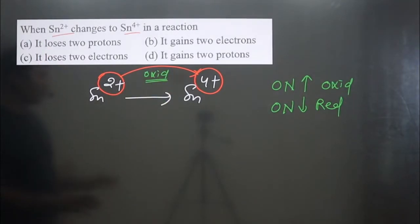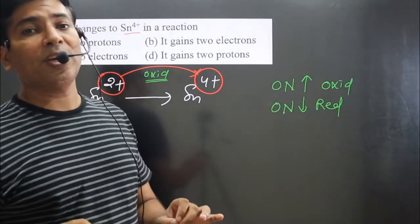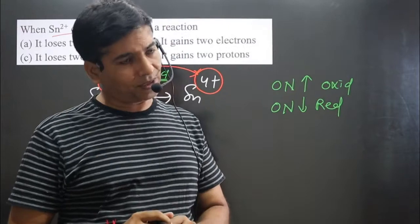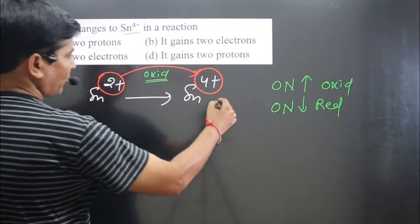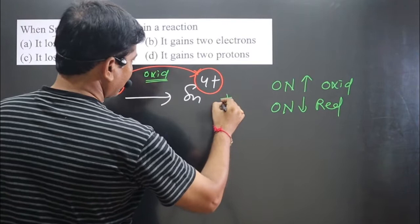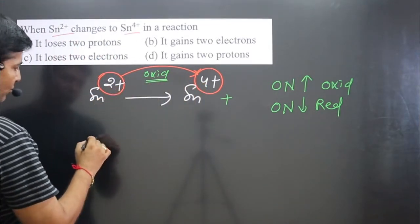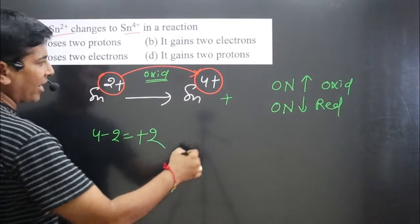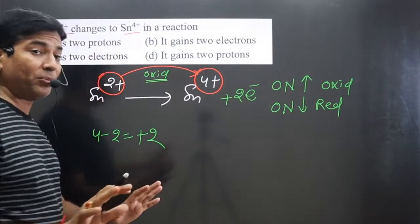We have also learned that in an oxidation reaction, we always add electrons on the right side of the equation. Now find the difference in oxidation number: +4 minus +2 equals 2. So we add two electrons on the right side. Always keep in mind: in oxidation reaction, we add electrons on the right side.